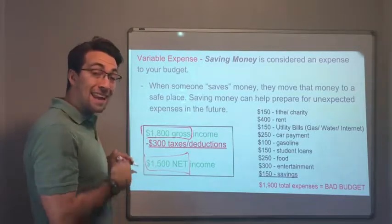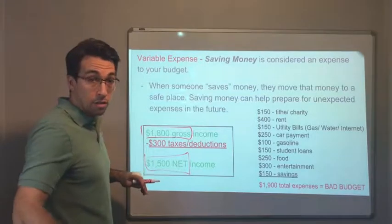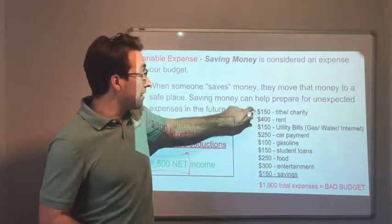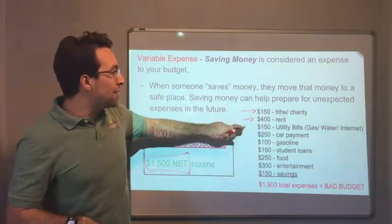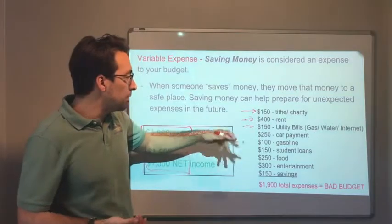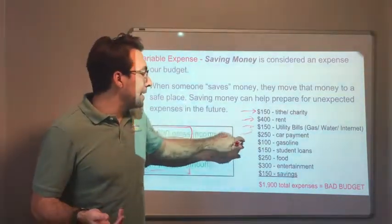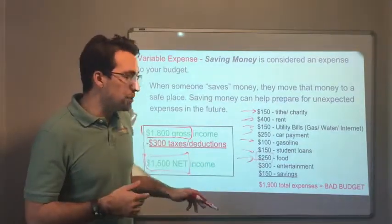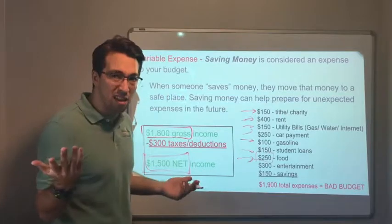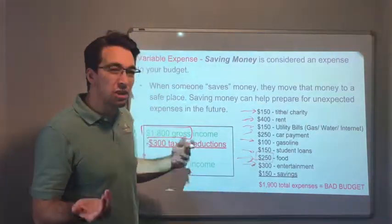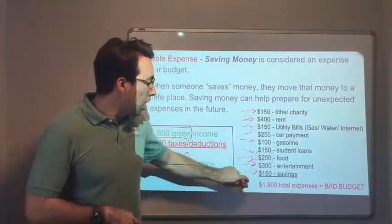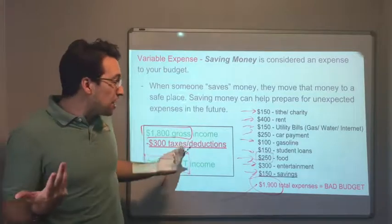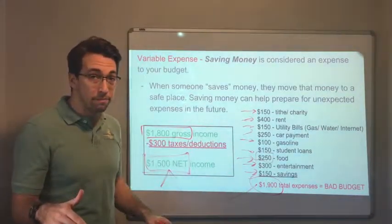The net income — the money you actually get to spend after deductions — is what matters. Budget line items include tithe or charity, rent, utility bills, gas, water, internet, electricity, car payment, gasoline, student loans, and food. Food here is only about $60 a week, which isn't much if you go out to eat. There's also $300 for entertainment. The total comes to $1,900 in expenses against $1,500 net income — that's an unbalanced budget.